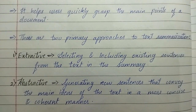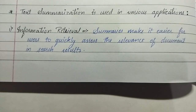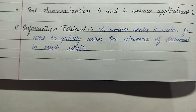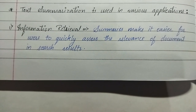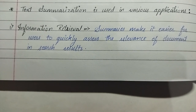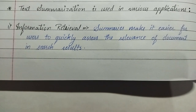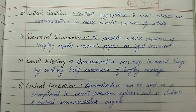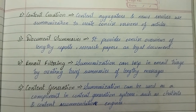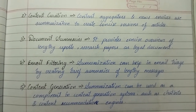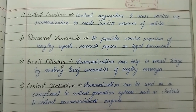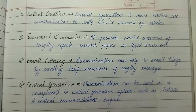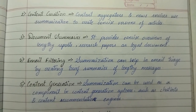Now we'll see how text summarization is used in various applications. First is information retrieval — summaries make it easier for users to quickly assess the relevance of a document in search results. Second is content curation — content aggregators and news services use summarization to create concise versions of articles. Third is document summaries — it provides a concise overview of lengthy reports, research papers, or legal documents.